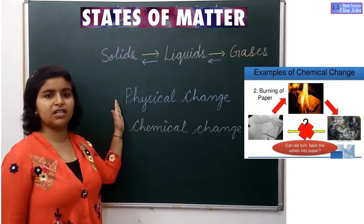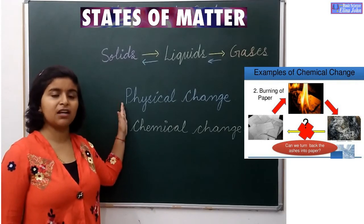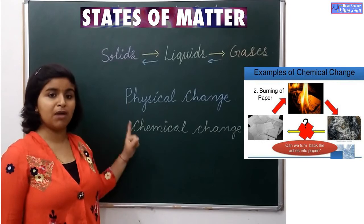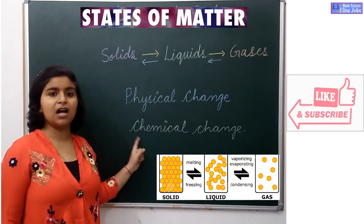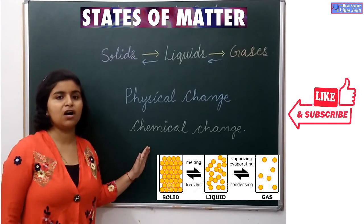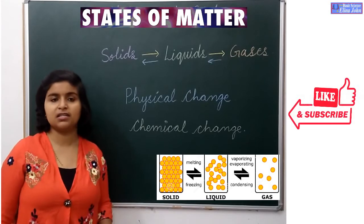Physical change is a temporary change and it can be reversed back—it is reversible. But chemical changes are permanent changes and irreversible. We cannot reverse them back.